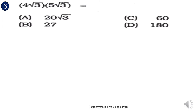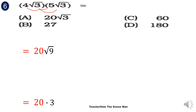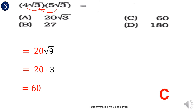Next, we have 4 times the square root of 3, times 5 times the square root of 3. The first thing we do is multiply 4 and 5, then multiply square root of 3 times square root of 3. So 4 times 5 is 20, times the square root of 9. The square root of 9 is 3, so 20 times 3 gives 60. The correct answer is letter C.